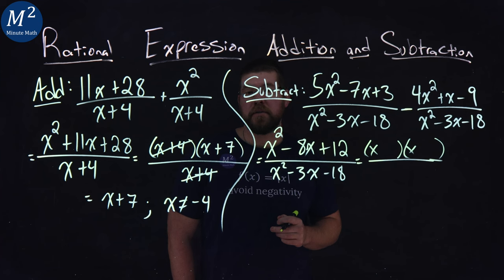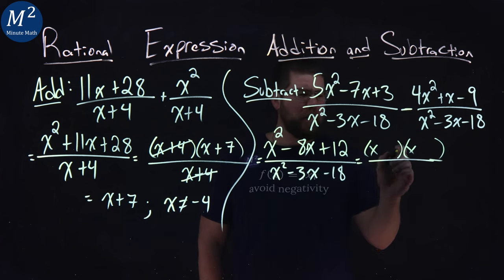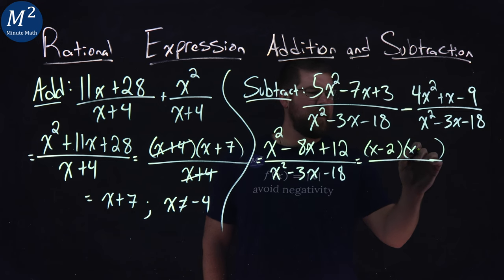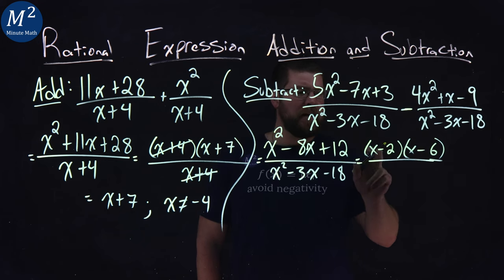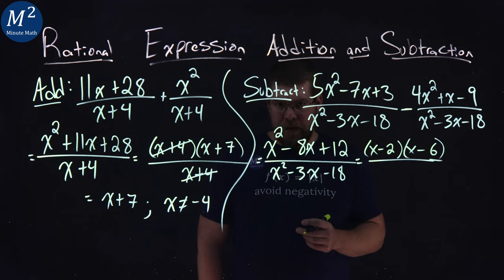What two numbers multiply to be 12, but add to be a negative 8? And I'm seeing a minus 2 and a minus 6. Negative 2 times negative 6 is a positive 12. When we add the two, we get minus 8.